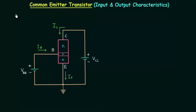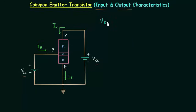In the last lecture I explained common emitter configuration of a transistor. In this lecture we will plot input and output characteristics of common emitter transistor. This is common emitter configuration because emitter is common to the input side and to the output side. We are using an NPN transistor in which VBB and VCC are the biasing potentials.